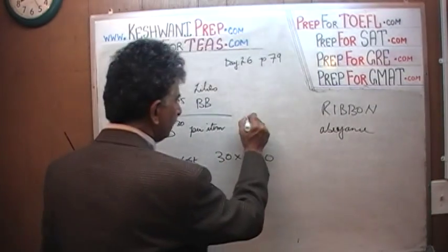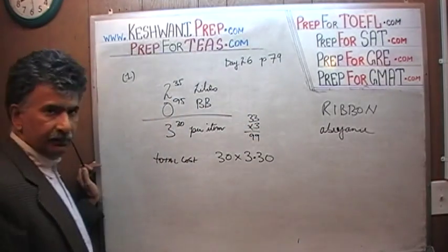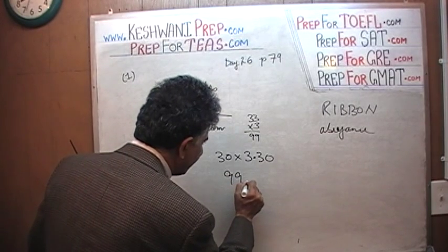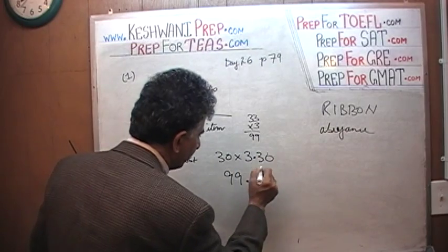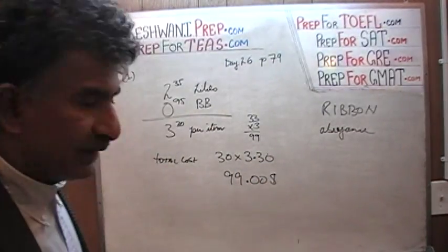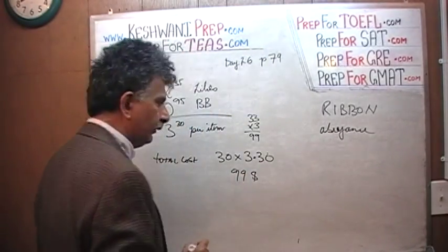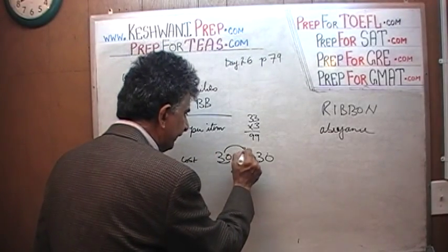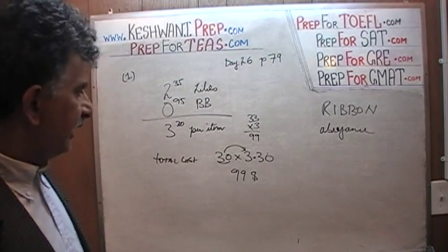We know that 33 times 3 is 99. So we get 99 here. Here is our decimal point, and of course we have two zeros there — $99. It's $99 altogether, which makes perfect sense because 30 times 3 is 90 and then 30 times 0.3 is 9. So it's $99 altogether.